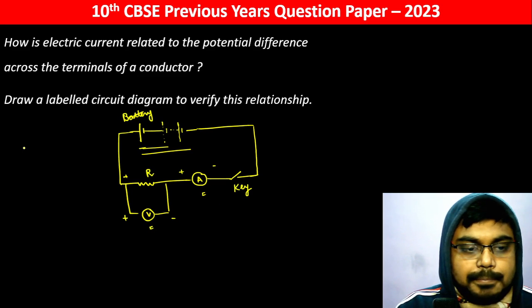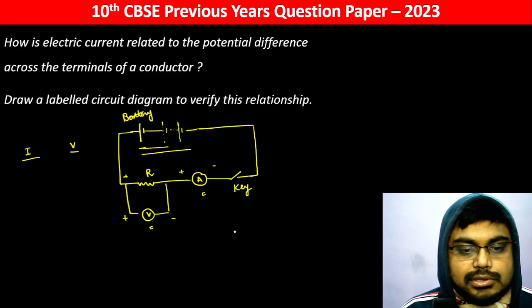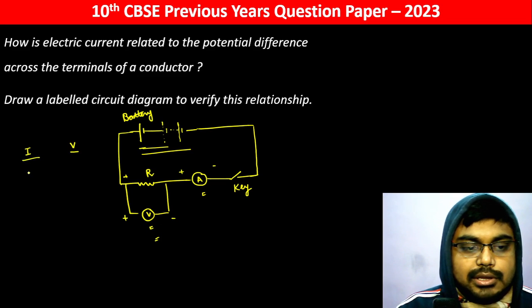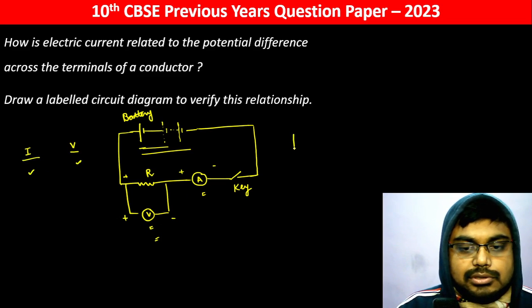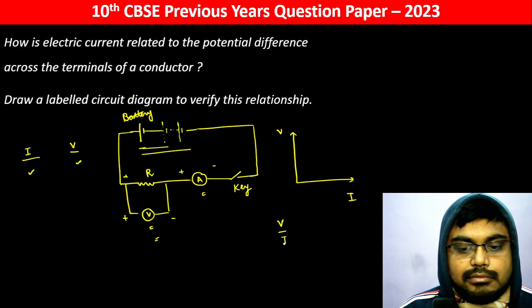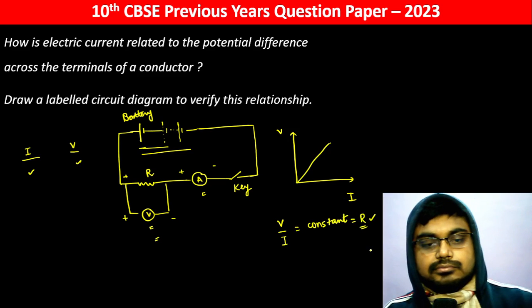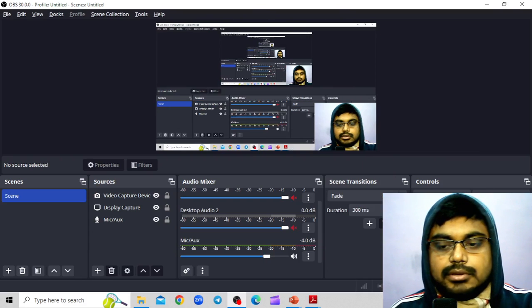You keep on plotting I and V. यह होगा voltmeter. And when you draw the graph, V divided by I will be constant. This graph will be a straight line. यह जब constant रहेगा.